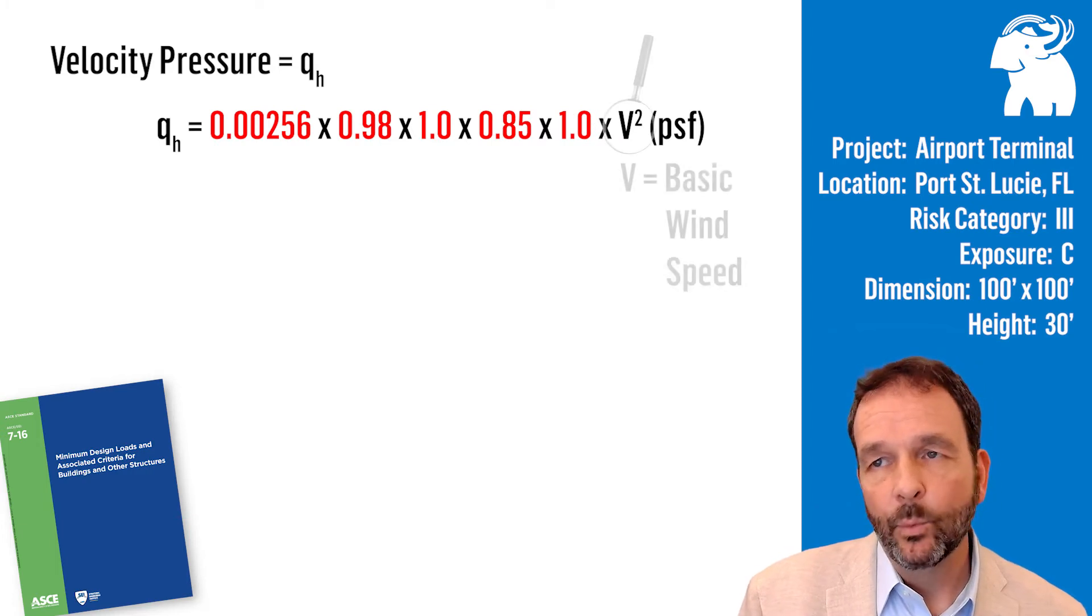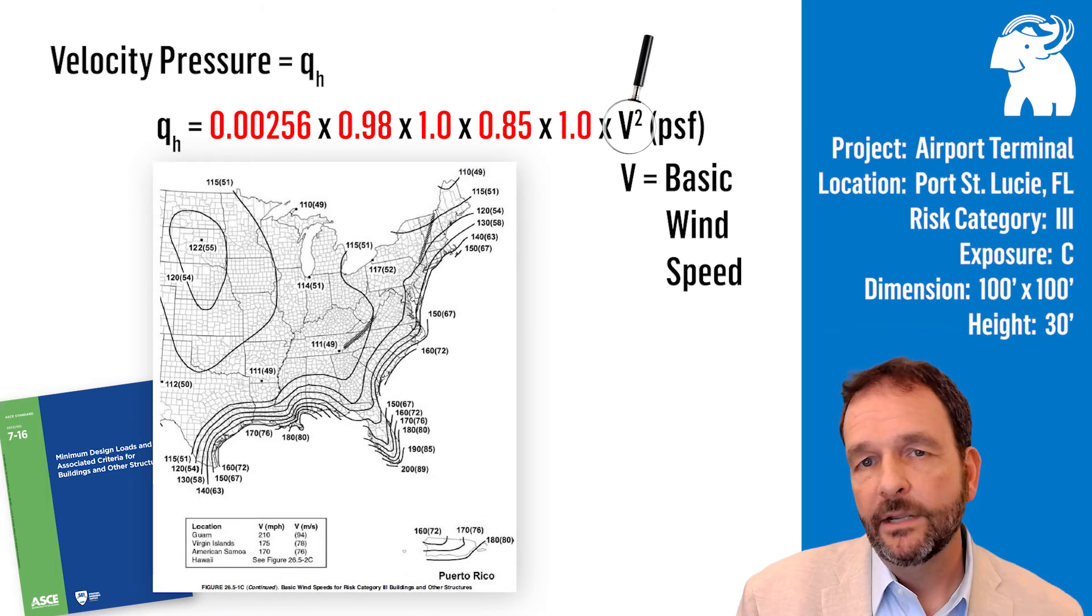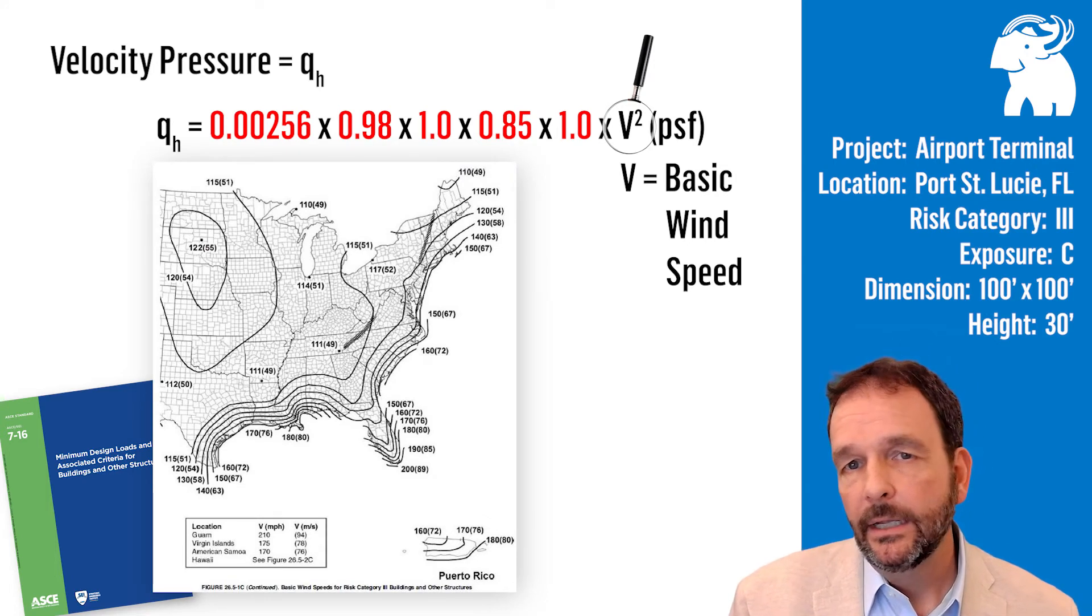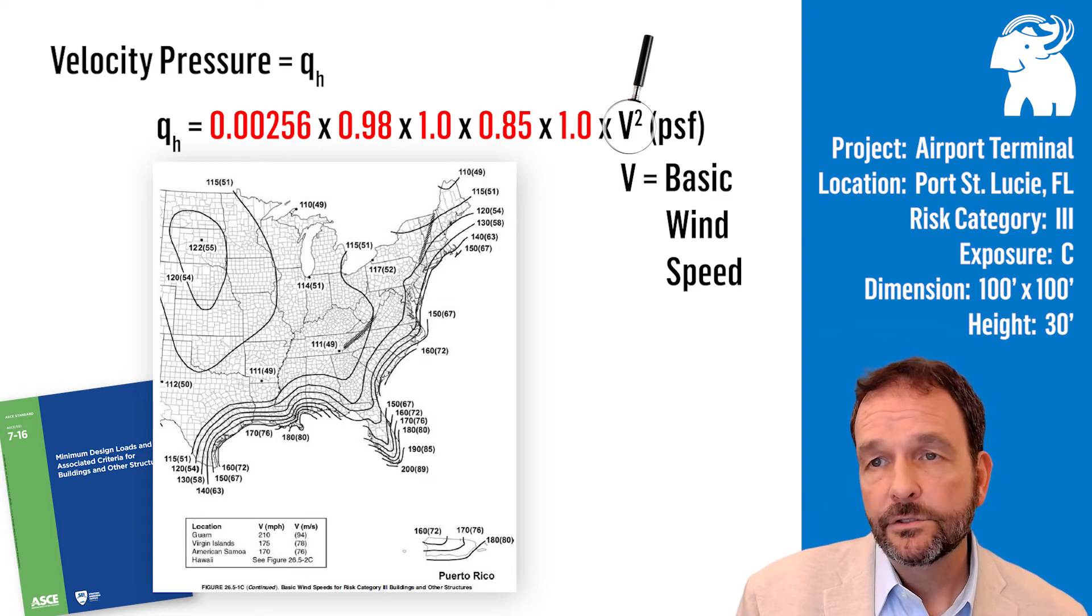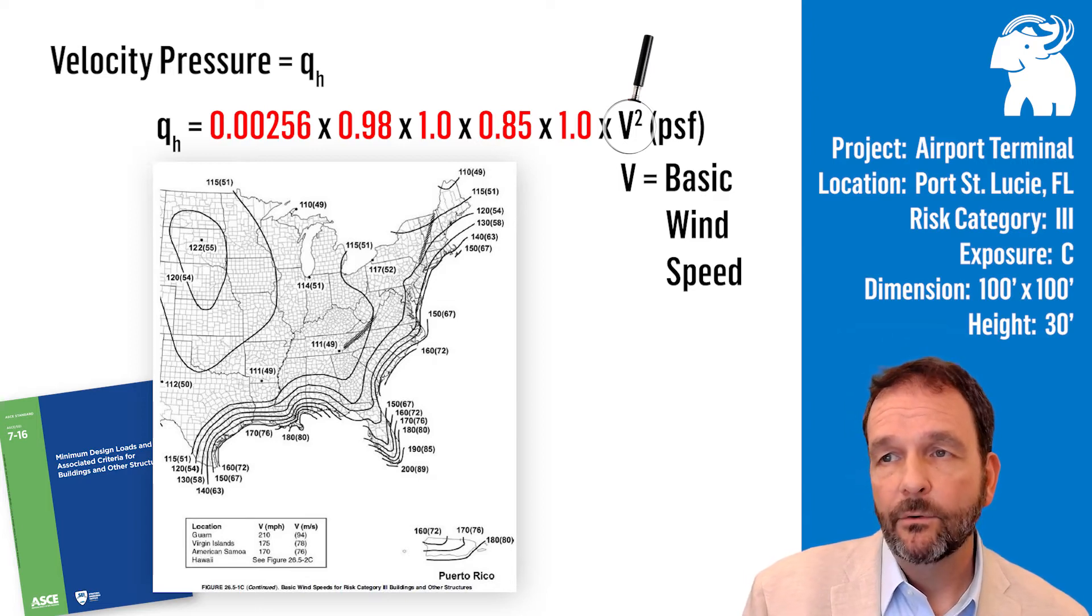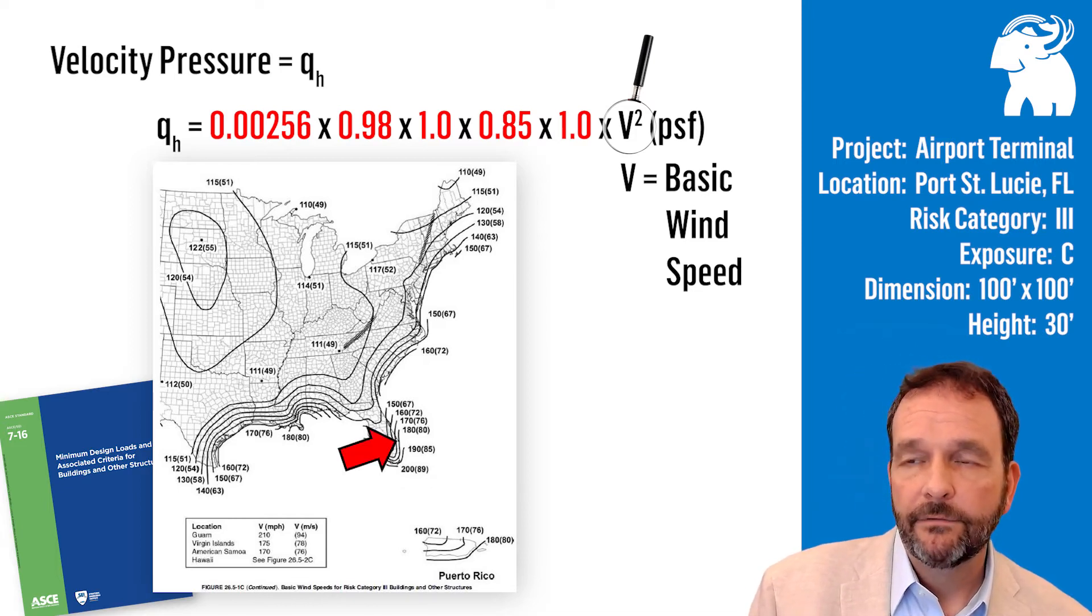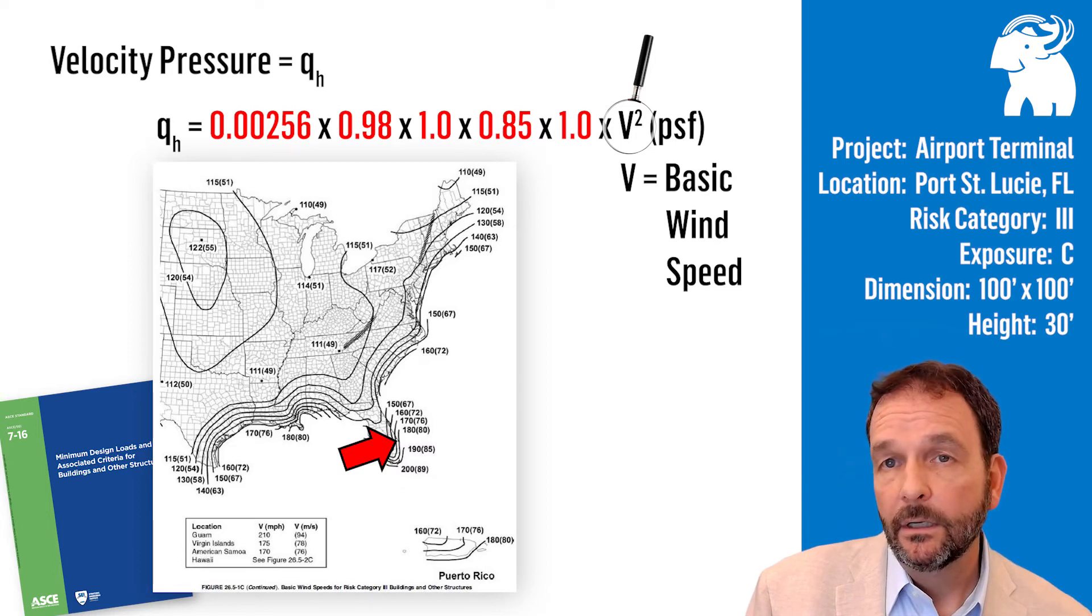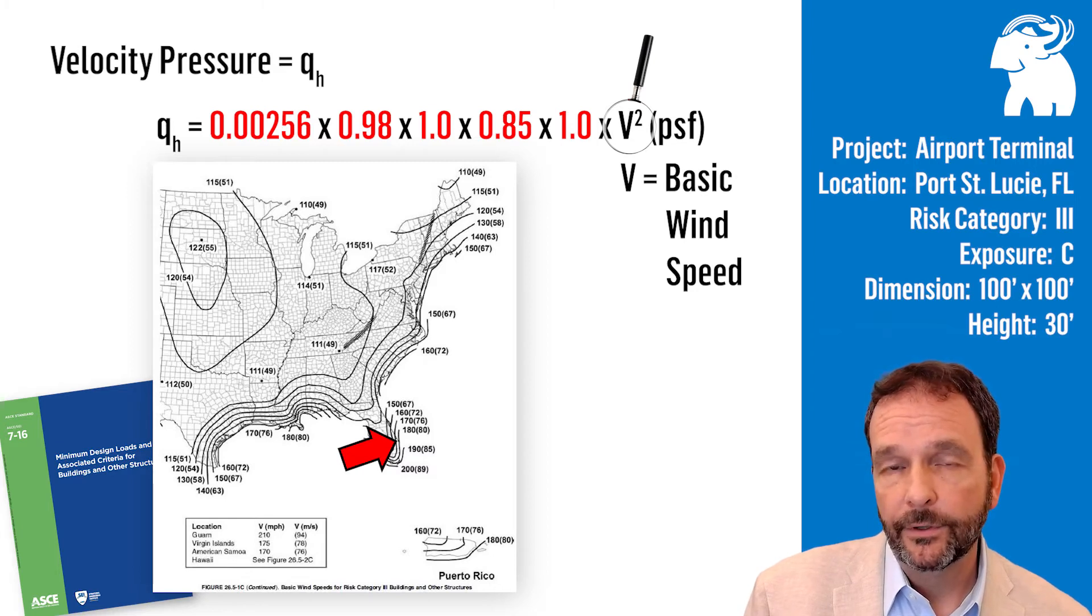Our next variable is our basic wind speed, pulled from maps in ASCE 7-16. For our example, we're considering risk category 3. The failure of this building could result in substantial risk to human life. So we're going to use our risk category 3 map. For Port St. Lucie, Florida, velocity would be 170 miles per hour. The Florida building code also requires you follow their building code maps, which coincidentally are the same, and the wind speed is 170 miles per hour.